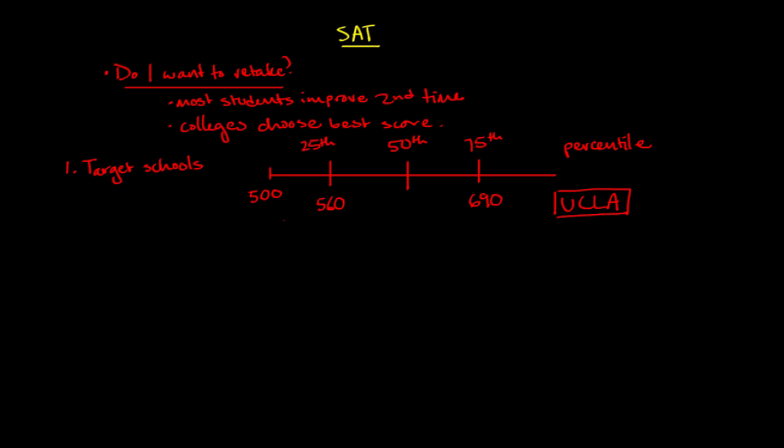If you scored a 600 on the critical reading for the SAT, then you're certainly more competitive at UCLA. You are between the 25th percentile and the 75th percentile. Again, you're more competitive, but it's still maybe a score that you may want to think about trying to push up if you haven't studied a lot and still feel like you could do better.